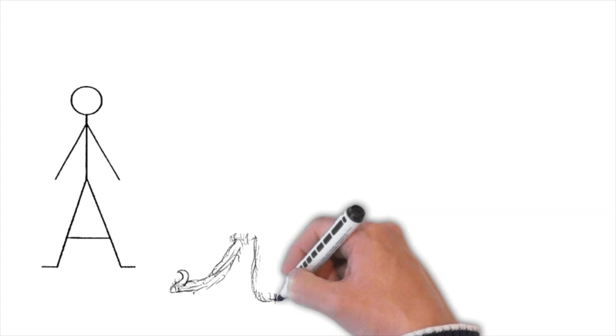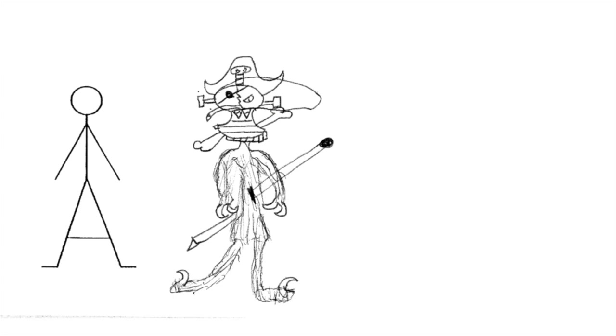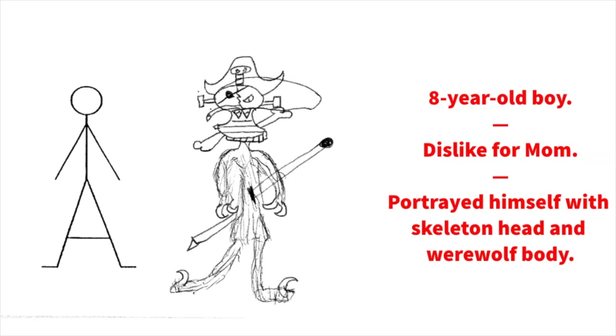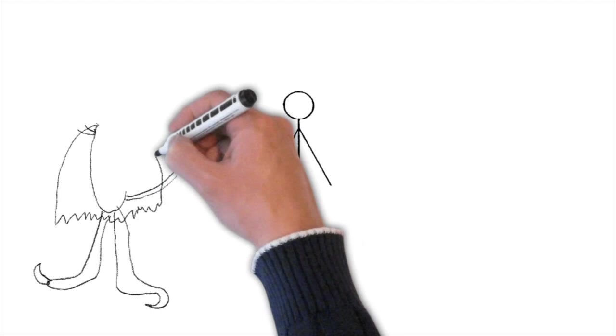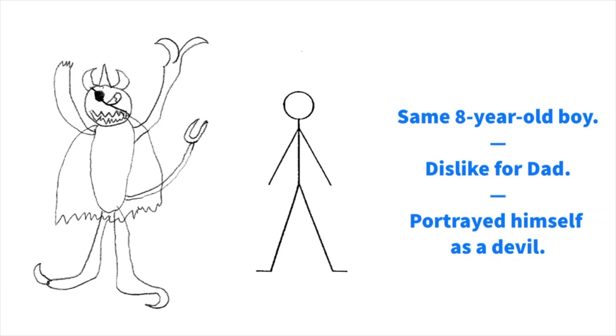This is a drawing of an eight-year-old boy expressing dislike for mom. He portrayed himself with a skeleton head and a werewolf body to express that dislike for his mother. The same eight-year-old boy expressed his dislike for his dad by portraying himself as a devil.